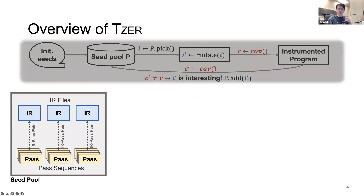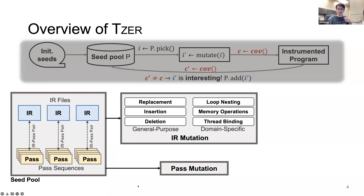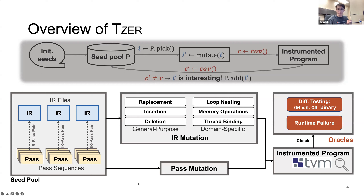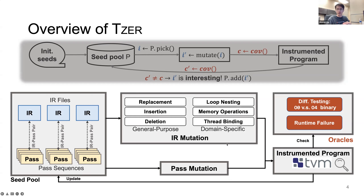Similar to the general fuzzing pipeline, TEASER treats a pair of an IR file and pass sequence as a test unit. During mutation, we separately mutate the IR and the passes and observe coverage feedback on the instrumented program. Our oracles include runtime failures and result or performance differences between optimized and non-optimized binaries. Once we find a new interesting test, we add it to the seed pool.